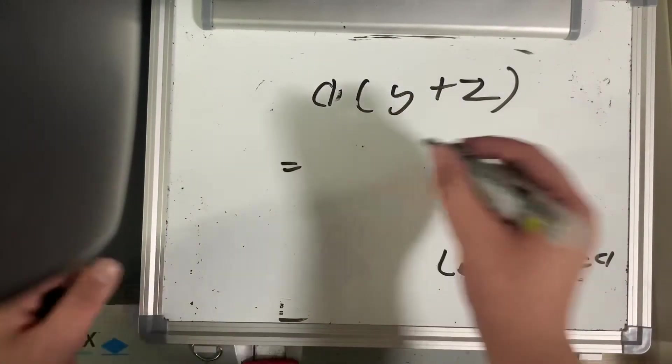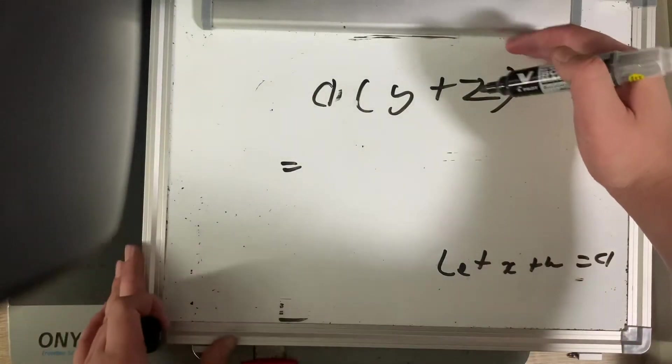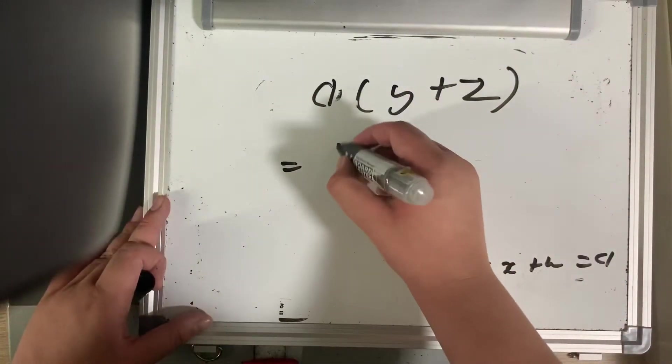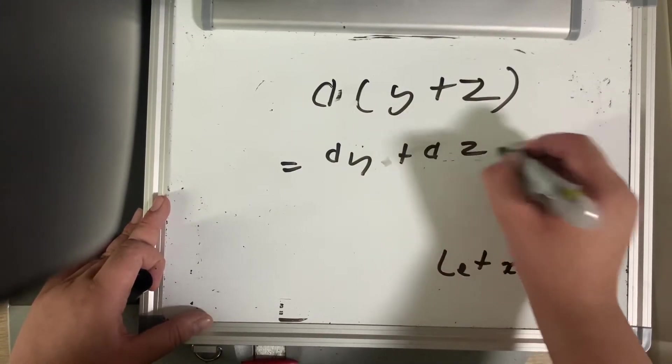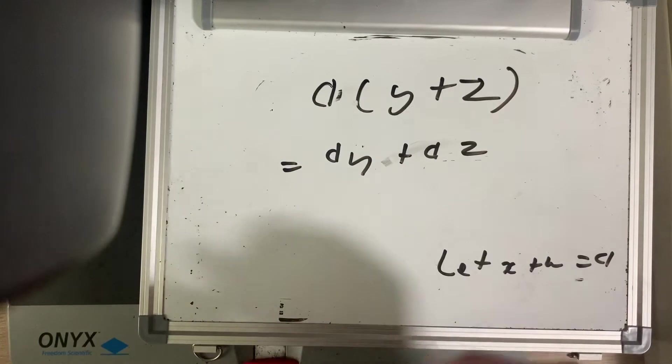It's simpler now. We could perform regular distribution of the distributive property. That becomes ay plus az. This is pretty standard stuff.